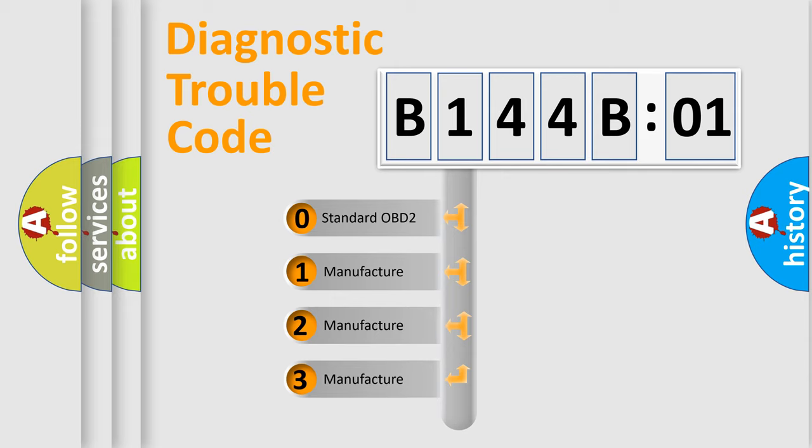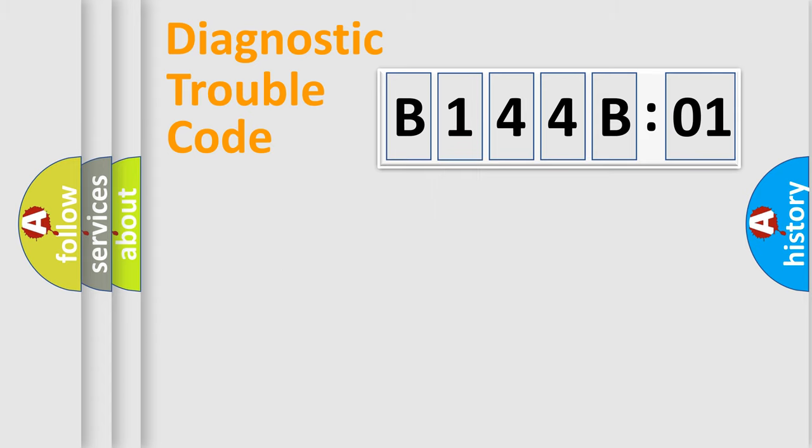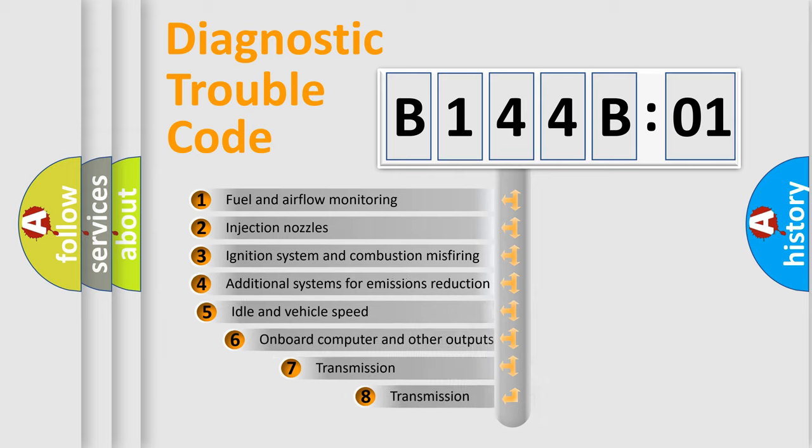If the second character is expressed as zero, it is a standardized error. In the case of numbers 1, 2, 3, it is a more prestigious expression of the car-specific error.